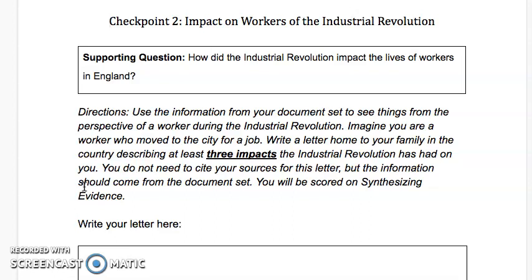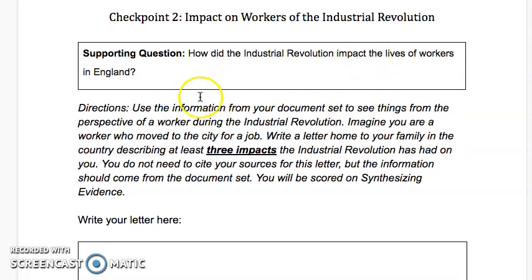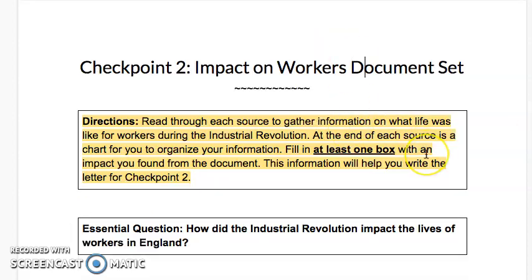Since our goal is to write a letter from the perspective of a person alive at that time, once we start writing we'll use first-person language and talk about events like they're actually happening to you. The first step is to go to your resources and open up the Checkpoint 2 Impact on Workers document set.